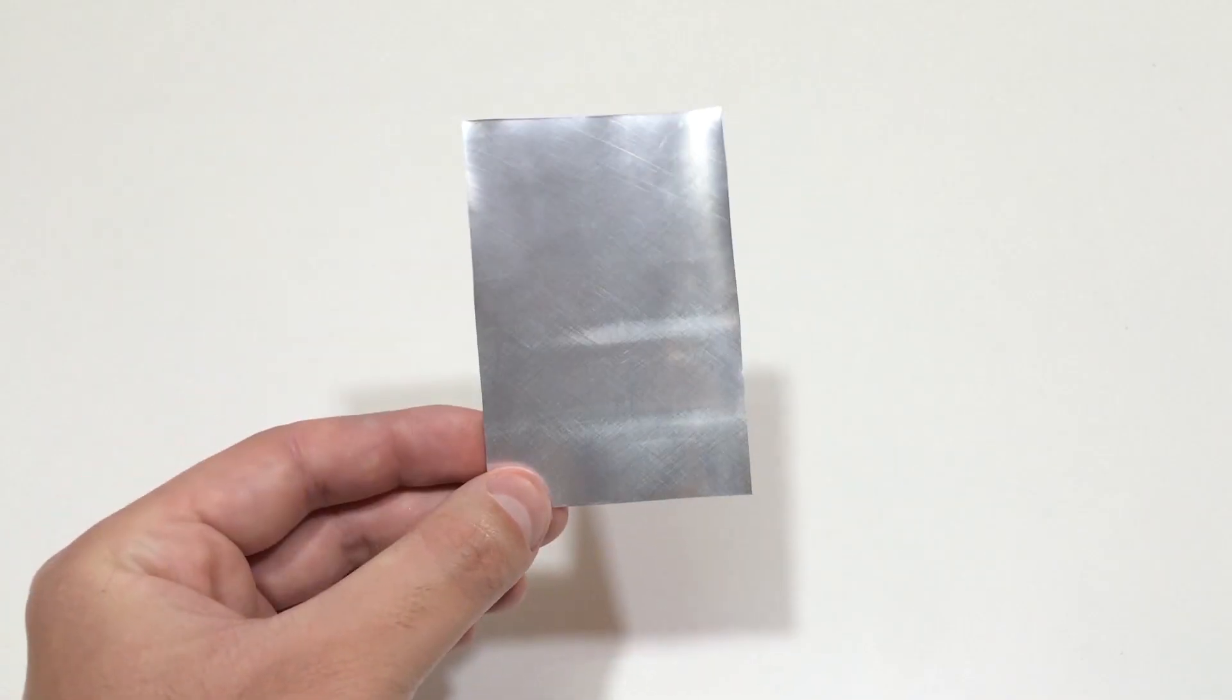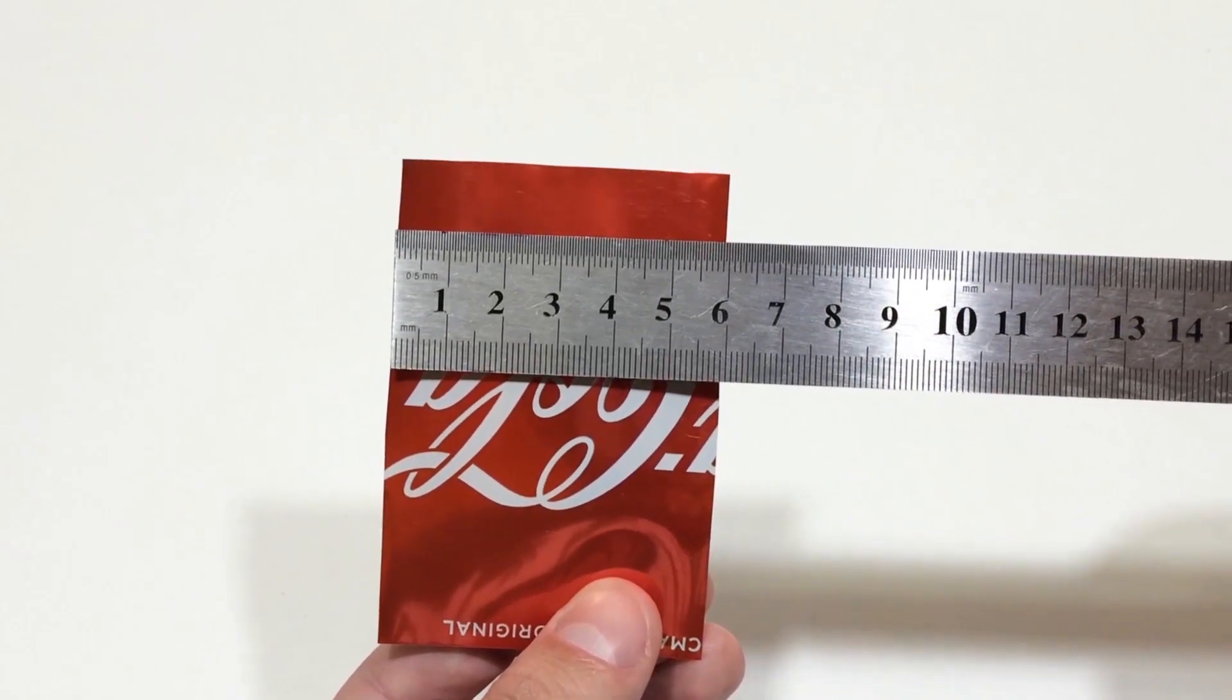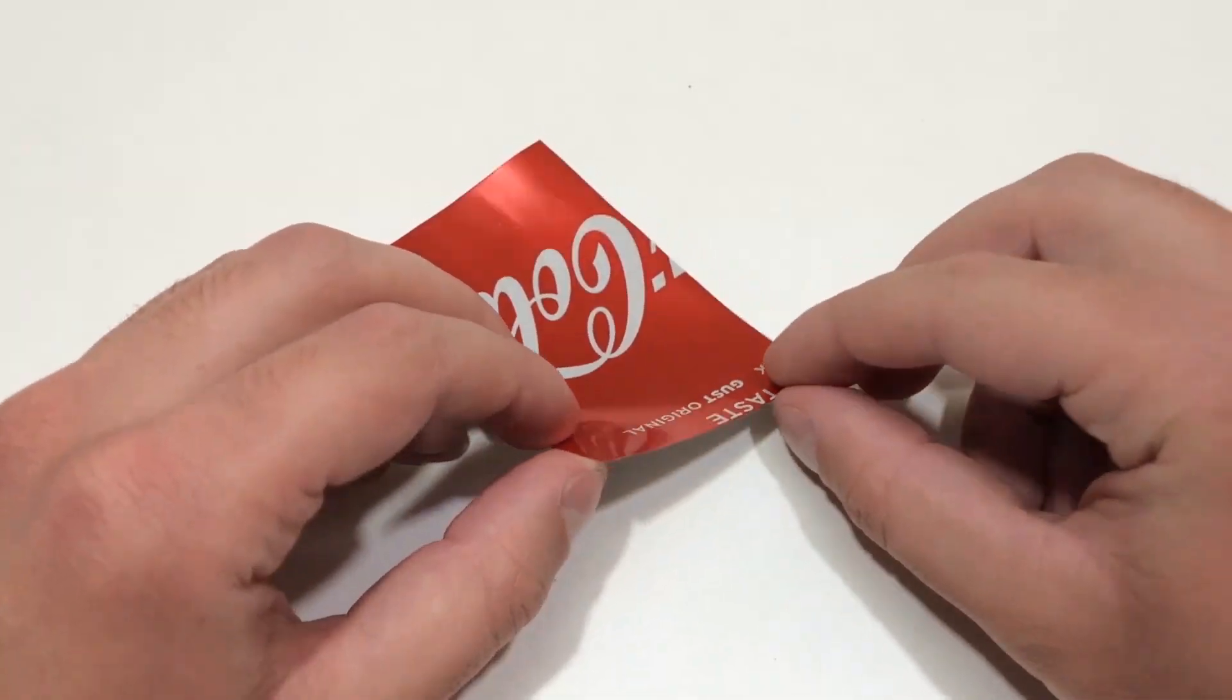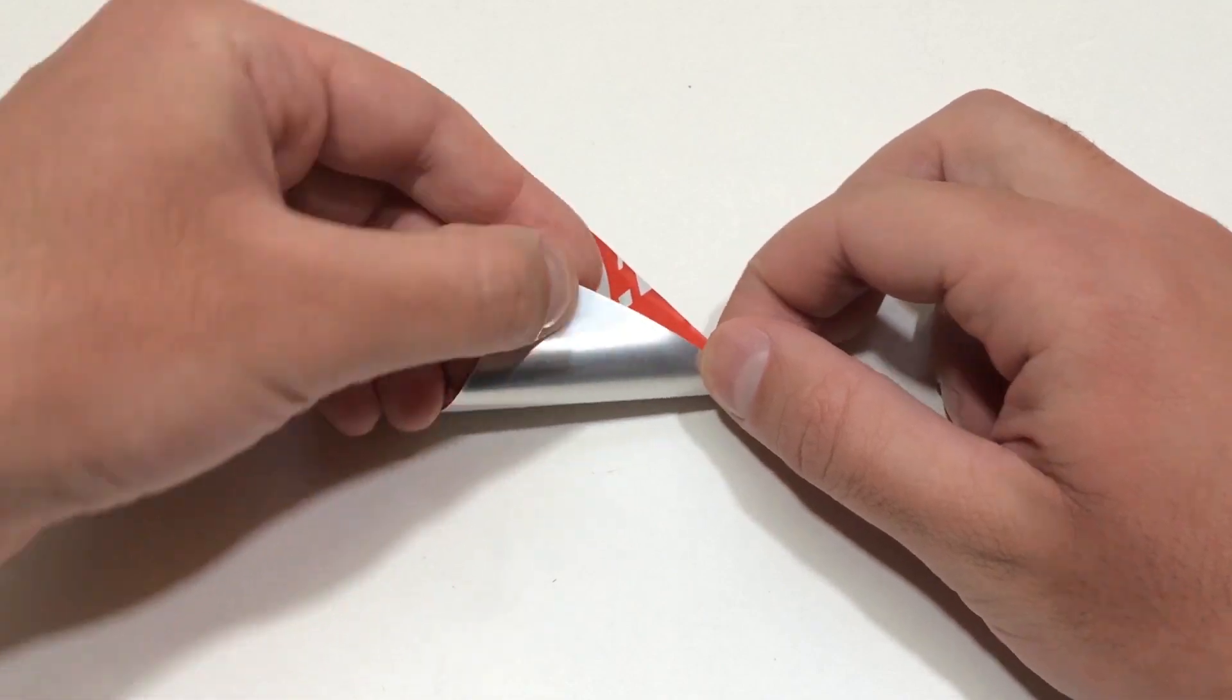First, carefully cut out a 4x2 inch rectangle from the can. Be careful. This stuff is sharp. Now roll it into a cone just like this.